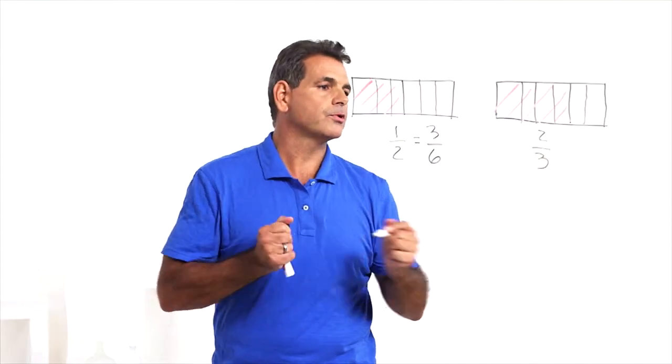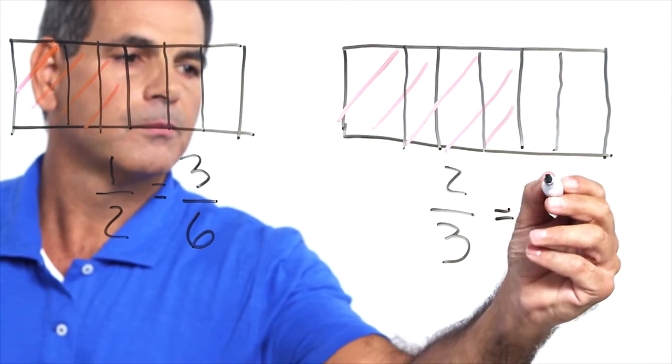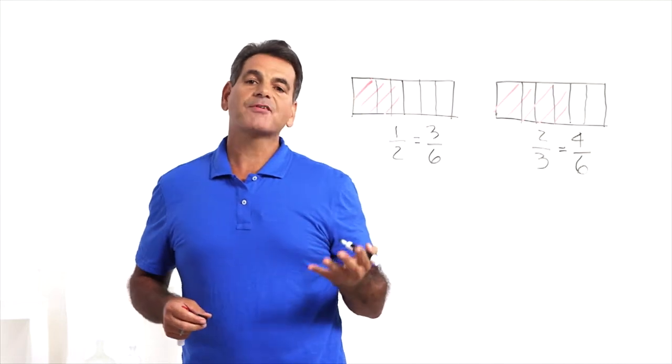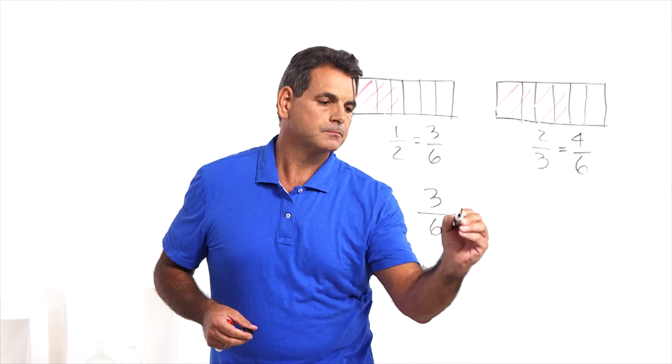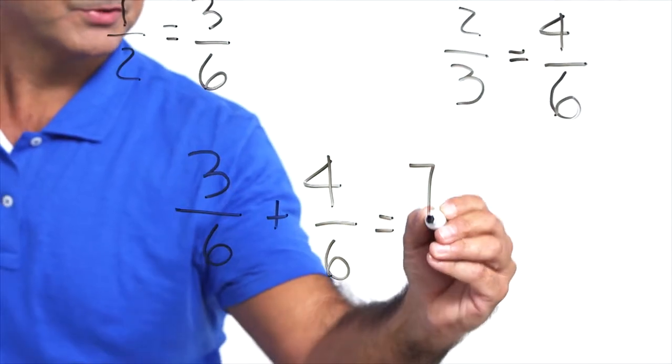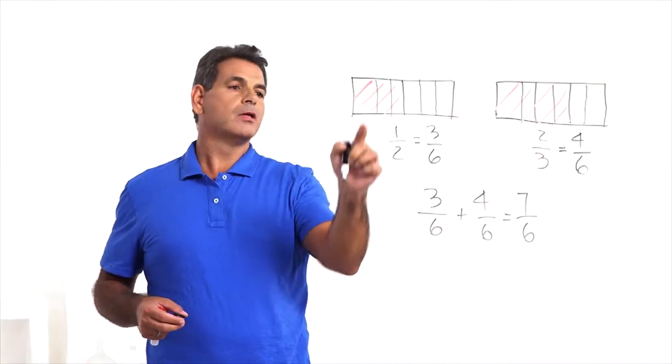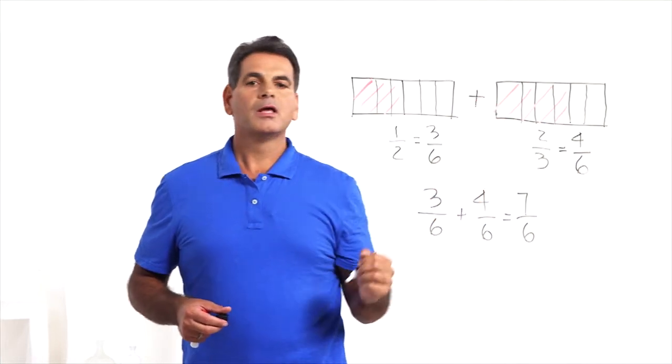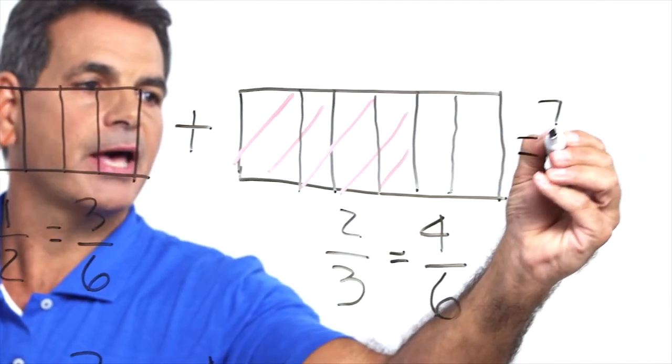And 2 thirds equals 1, 2, 3, 4 sixths. Now that we have common denominators, we can add. 3 sixths plus 4 sixths equals 7 sixths. And we can check it by looking at our bar model. 1, 2, 3 sixths plus 1, 2, 3, 4 sixths equals 7 sixths.